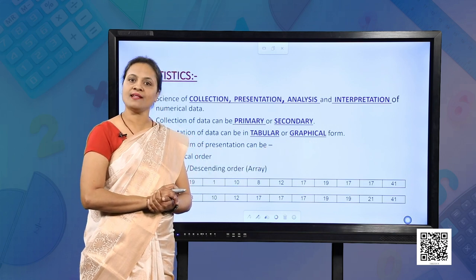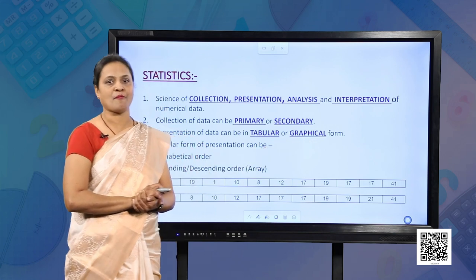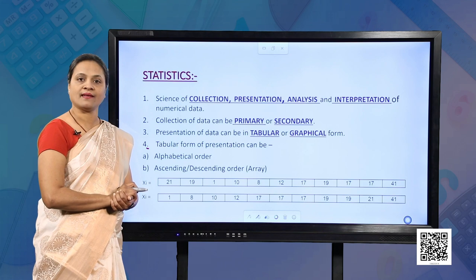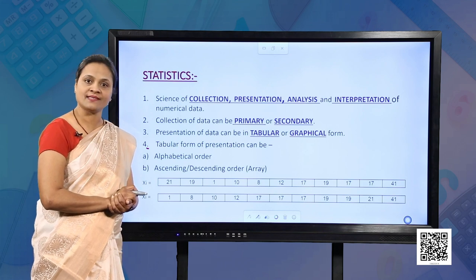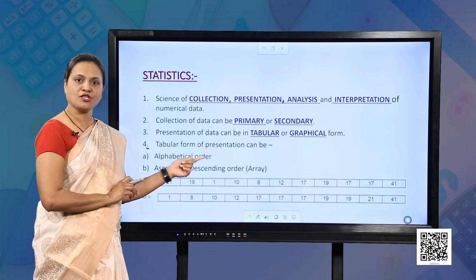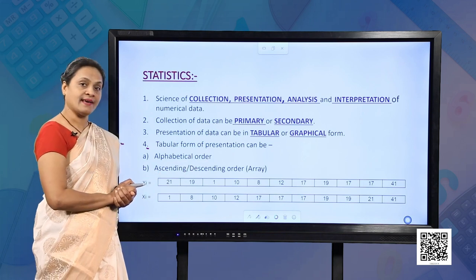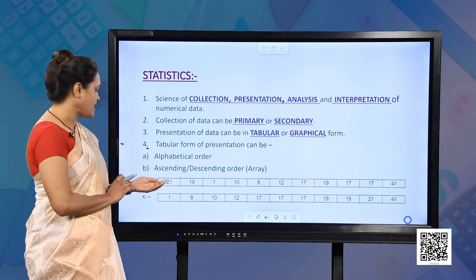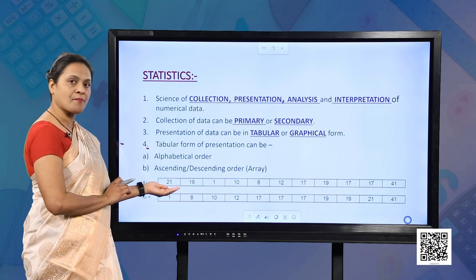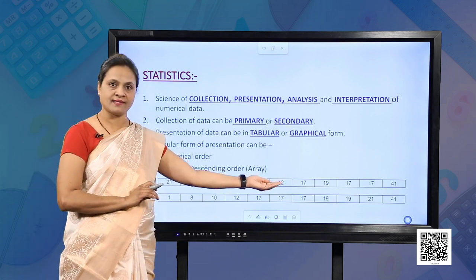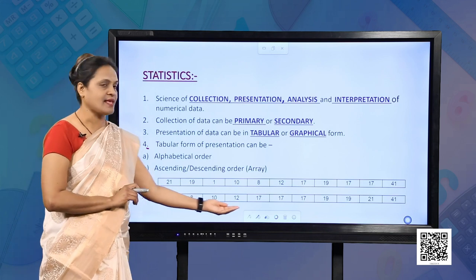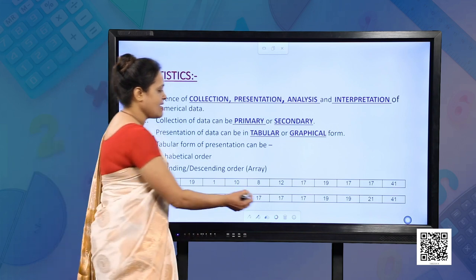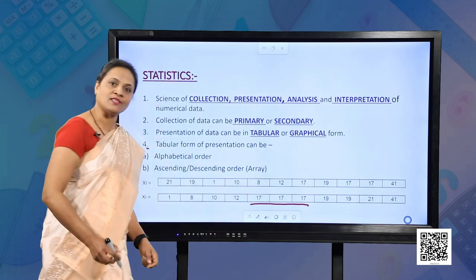Let us review how we represent the data in tabular form. The list of your class can be written in alphabetical order — names of all the students. When the data is numerical, it can be arranged in ascending or descending order. By Xi we are representing marks of 11 students, and when these marks are arranged in ascending order, we can draw some results.